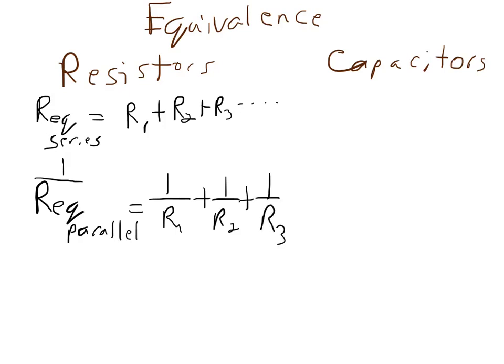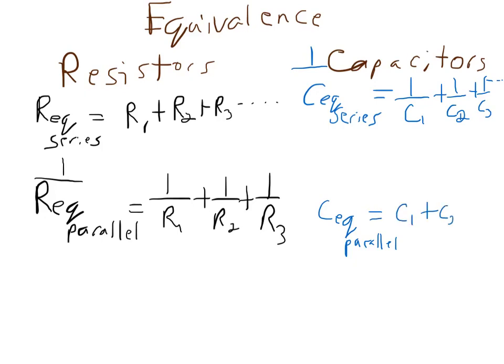Now for capacitors, it's opposite. For equivalent capacitance in series, because you're decreasing the voltage every time you add something for the electrons to fall across, we use inverses to show that every capacitor will decrease the equivalent capacitance. So 1 over C1, 1 over C2, 1 over C3, and so on. For capacitors in parallel, because the voltage is the same for all of them in parallel, you're actually allowing more charge to be stored and thereby increasing the capacitance. You just add them, C1 plus C2 plus C3.